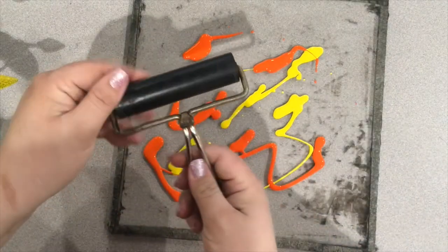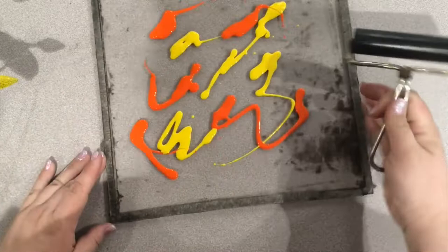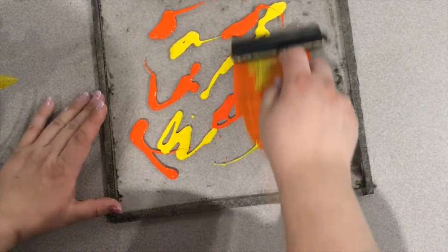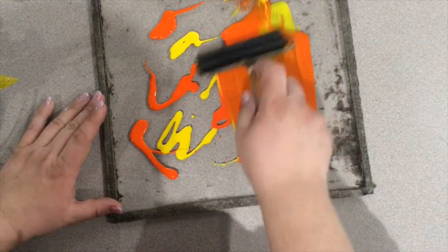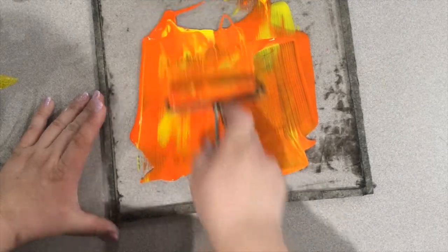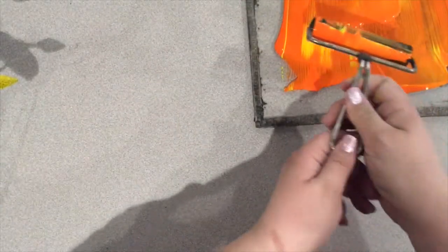We're going to be using a special tool called a brayer. This is a printmaking tool. It's basically a rubber paint roller. Use the brayer to roll through your colors. We want them to be a little blended.